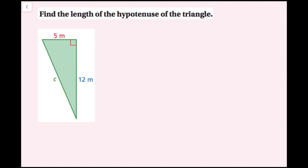For this example, we're going to find the length of the hypotenuse of the triangle. I notice I have a right triangle, and I know that I have 5 meters — this is going to be a leg because it's part of the right angle. 12 meters is also going to be a leg, and then C is going to be the hypotenuse because it's opposite the right angle. So I can use the Pythagorean theorem: A squared plus B squared equals C squared.